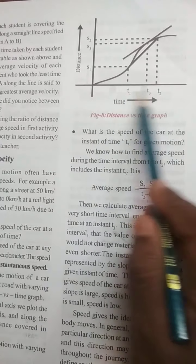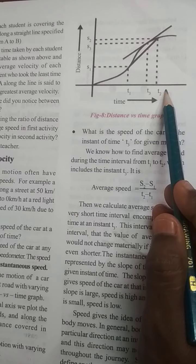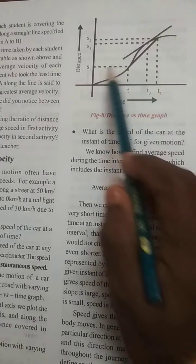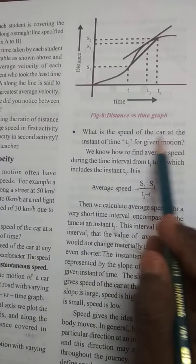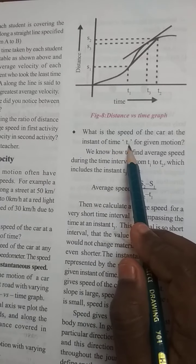Here you see, this is time along x-axis in seconds. This is y-axis, it shows distance in meters. What is the speed of car at instant time t3?